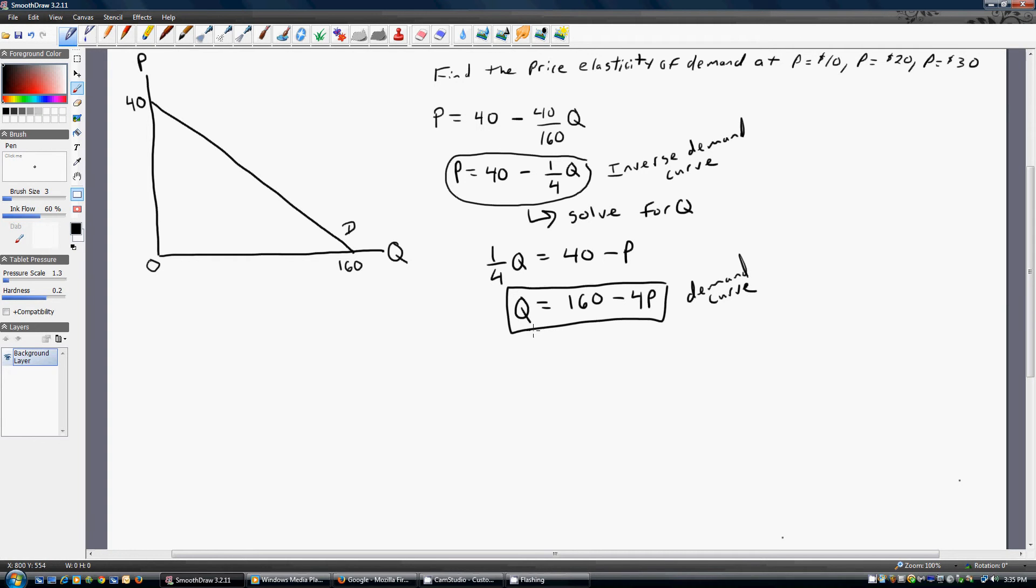In economics, we usually think of q, the quantity demanded, being the dependent variable, p, the price being the independent variable. Alright, so now we're about ready to calculate these price elasticities of demand. Let's review the price elasticity of demand formula.